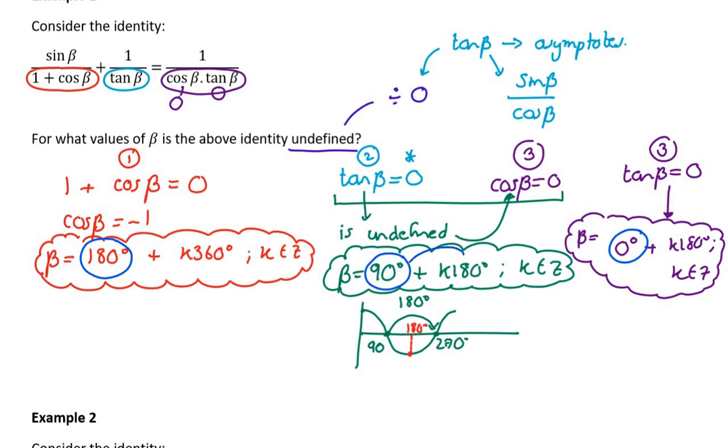And then if I go 90 plus 180, I'll get to 270. And then I'll go back to 360. So actually, all of these could combine to the idea that it's 0 plus k90, I'm pretty sure. Let me just check.